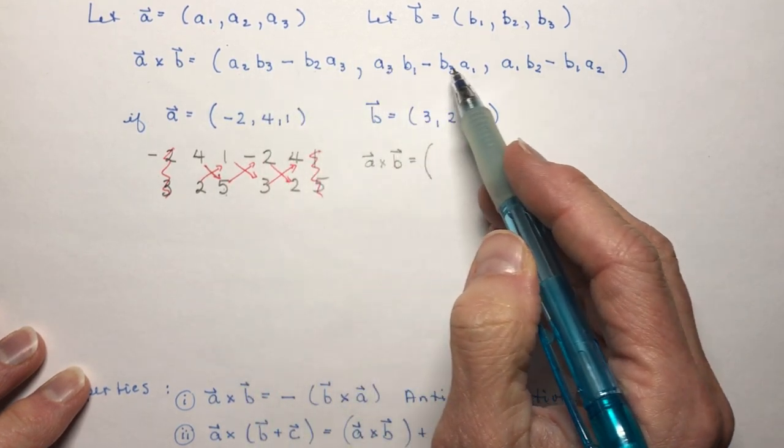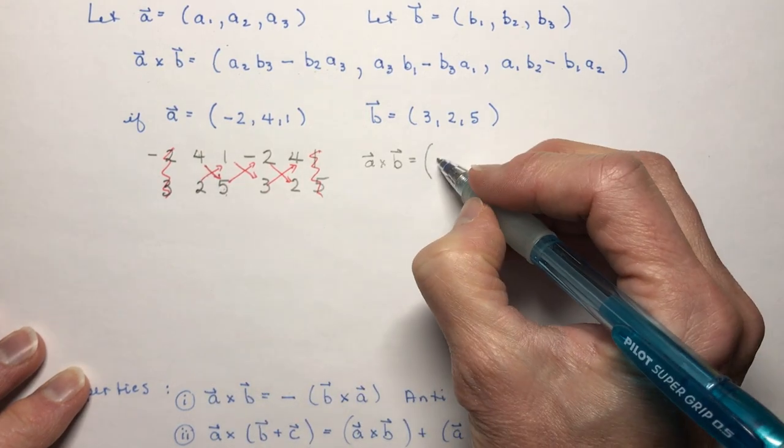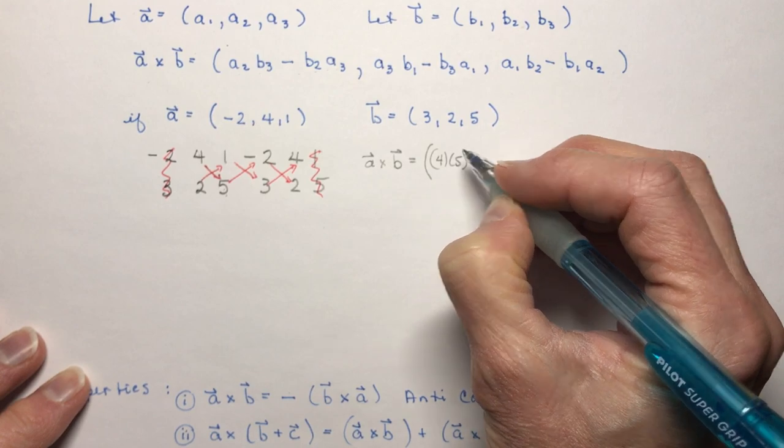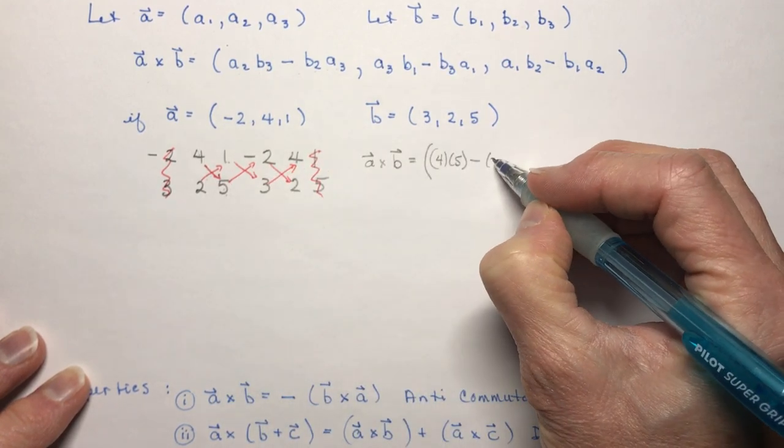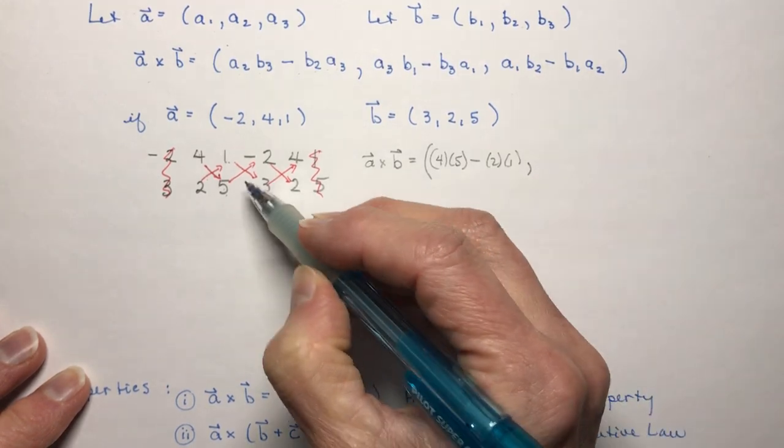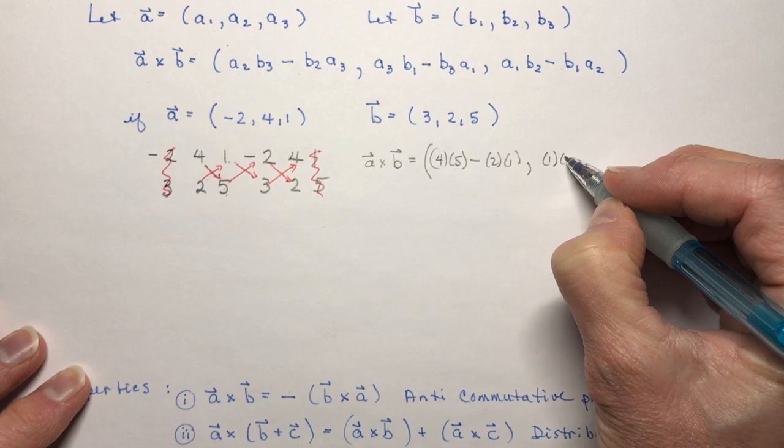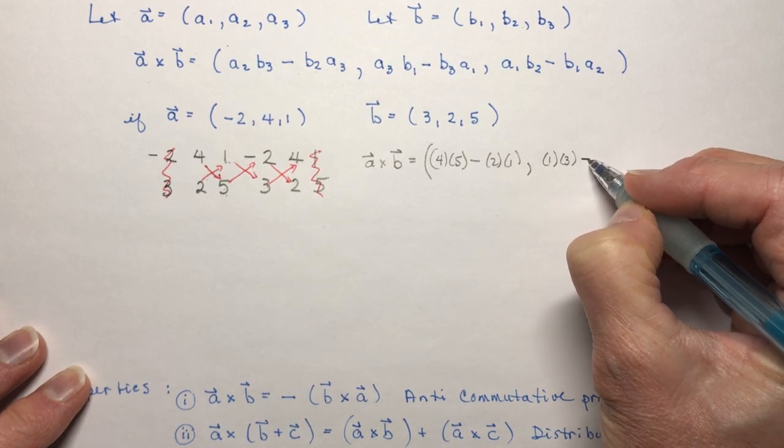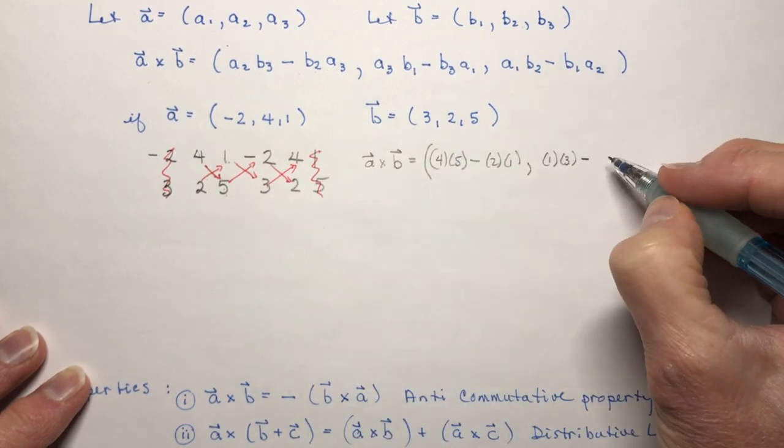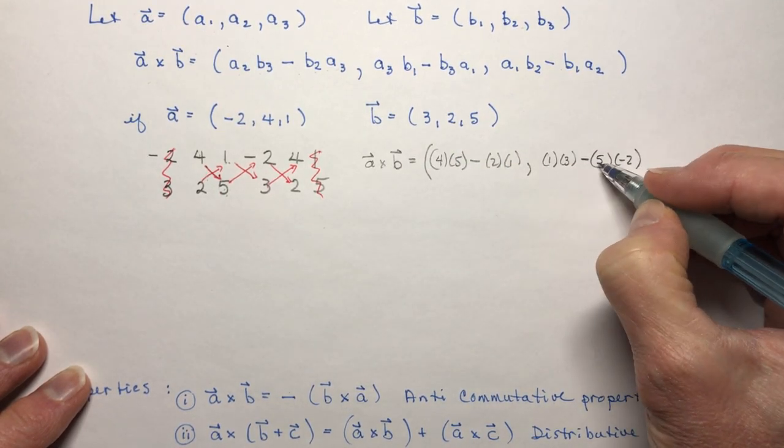So I would say 4 times 5 so I'm going to do 4 times 5 and I'm going to subtract 2 times 1 the only thing you have to be careful with here is signs and then I'm going to do 1 times 3 so 1 times 3 and I'm going to subtract from that 5 times minus 2 so be really careful with the minus obviously this is going to be an addition here.